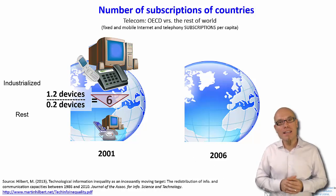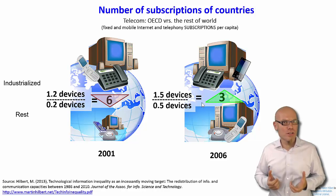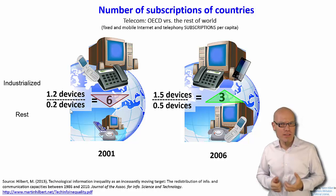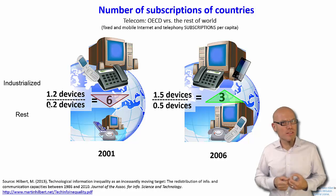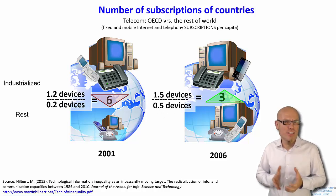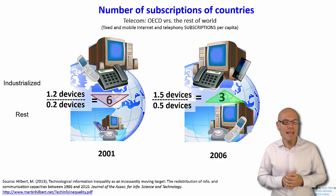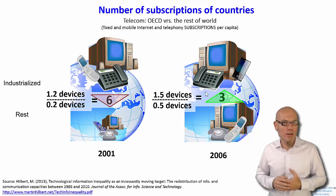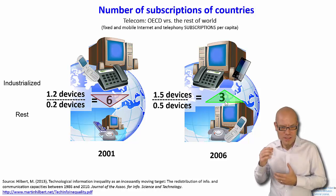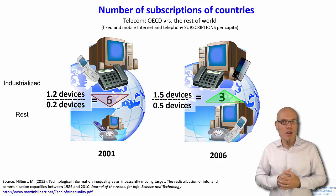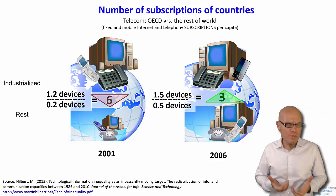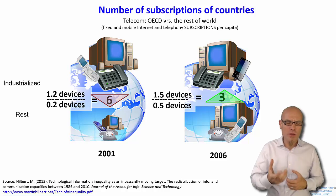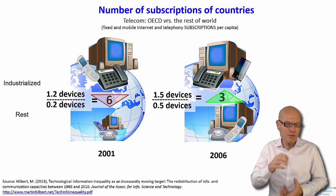Five years later in 2006, in developed countries the average subscriptions increased to 1.5 devices per person, and in developing countries it more than doubled to 0.5 devices per person — meaning every second person, 50% of society, already had access to an ICT solution. We calculate the divide again: 1.5 divided by 0.5 gives a divide of 3 to 1. So the divide closed from 6 to 1 down to 3 to 1. This is the most common way people look at the digital divide — counting the number of subscriptions.